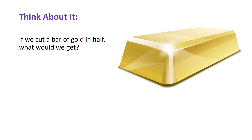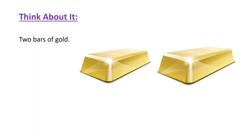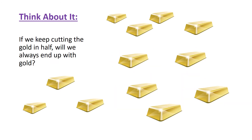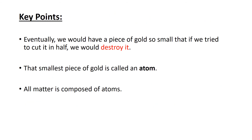If we were to take a bar of gold and cut it in half, what would we get? We'd get two bars of gold. What would we get if we cut each of those bars of gold in half again? We'd get four bars of gold. If we keep cutting the gold in half, are we always going to end up with gold? Can we do this forever? The answer is no. We can't cut a piece of gold in half forever and always end up with gold. Eventually, we'd have a piece of gold so small that if we tried to cut it in half, we'd destroy it. And we call that smallest piece of gold an atom. All matter is composed of atoms.